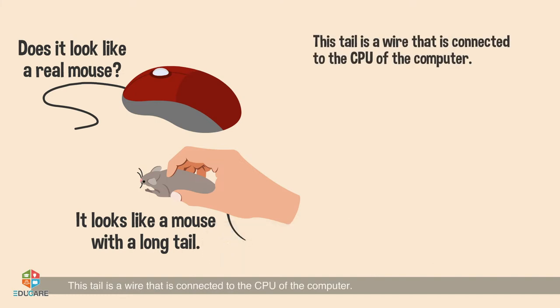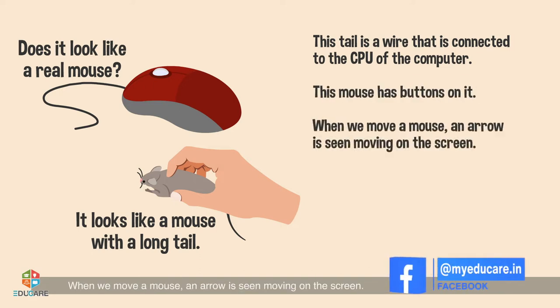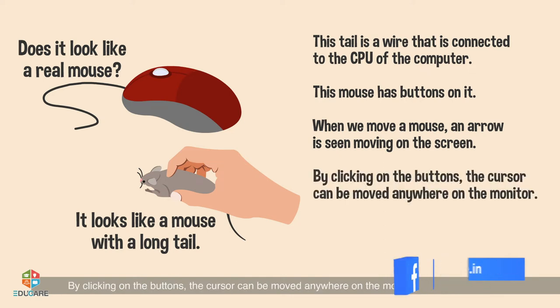This tail is a wire that is connected to the CPU of the computer. This mouse has buttons on it. When we move a mouse, an arrow is seen moving on the screen.